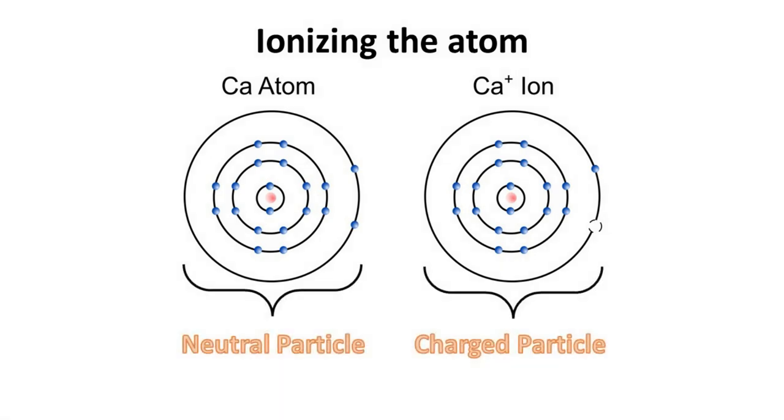While atoms are neutral particles, ions are charged particles, which makes them easier to be trapped. Neutral atoms can also be trapped, a discussion left for another time. First, we ask how are neutral atoms ionized?